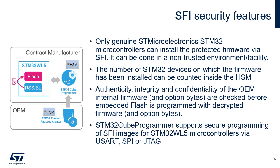OEM firmware and the option bytes are encrypted, thanks to the STM32 Trusted Package Creator Tool, during OEM firmware development. The OEM also uses this tool to program the Hardware Security Module, or HSM, with its AES secret key, its nonce, and a maximum installation counter. The OEM contract manufacturer uses STM32Cube programmer and provisioned HSM to initiate the SFI process and sends the encrypted SFI image to the STM32WL5 device. Authenticity, integrity, and confidentiality of the OEM internal firmware and option bytes are checked before the embedded flash is programmed with the decrypted firmware and option bytes.